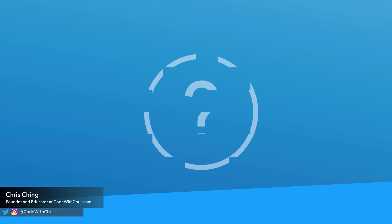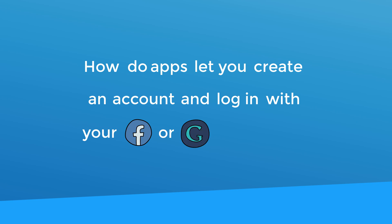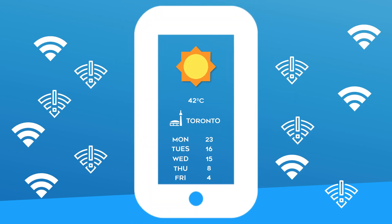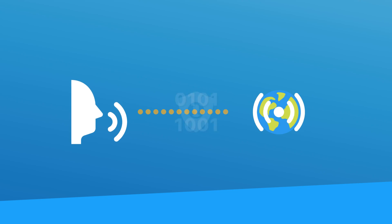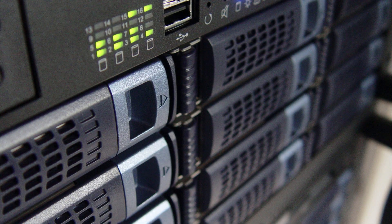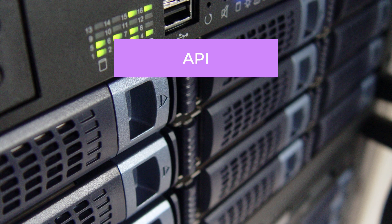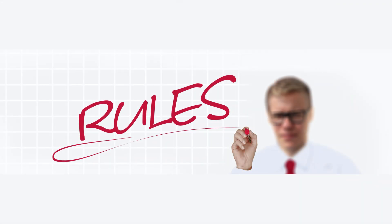Hey Code Crew, let me ask you a question. How do apps let you create an account and log in with your Facebook or Google credentials? How does your favorite weather app get today's weather forecast? The answer to both of these questions: they talk to other systems to get the data or to verify your credentials. And the way that these two systems talk to each other is through something called an API, or Application Programming Interface. An API simply states the rules for the communication to happen.